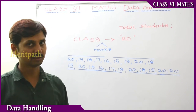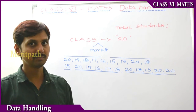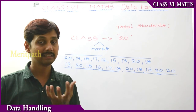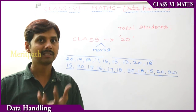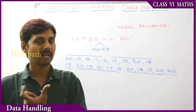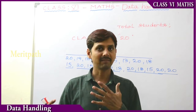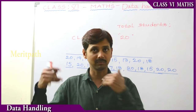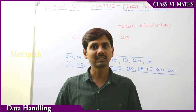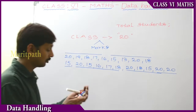So we have collected information from the class for the math subject. This collected information is called data. We have collected the information directly from the source — we conducted the test in the class and gathered all the marks of the students directly from the students. So this kind of collected information is called data.